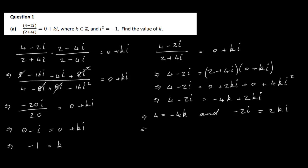From the real parts: 4 is equal to minus 4k, giving k equals minus 1. From the imaginary parts: minus 2 equals 2k, also giving k equals minus 1. So whatever way we did it, we got k equal to minus 1. That's part a.